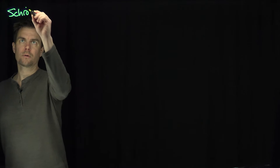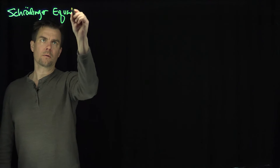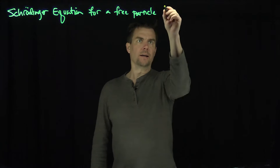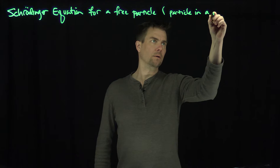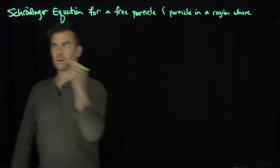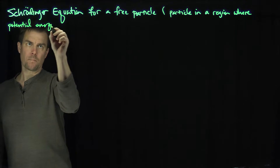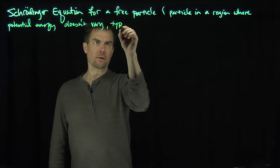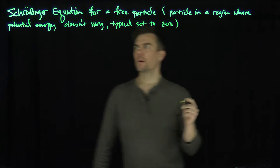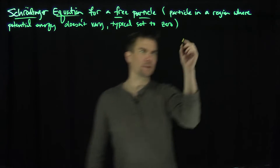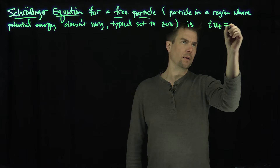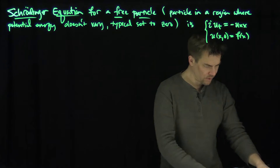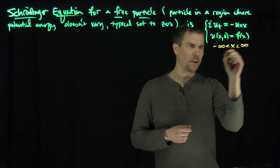The Schrödinger equation for a free particle — a particle in a region where potential energy doesn't vary — we typically set the potential to zero. For a free particle, the equation is: i u_t = −u_xx, with initial condition u(x,0) = f(x). The domain is x between negative infinity and infinity, and t ≥ 0.